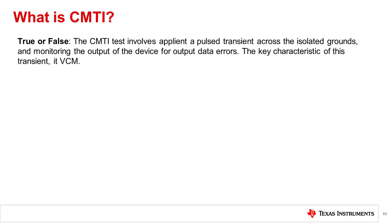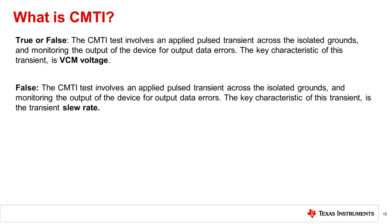True or false: the CMTI test involves applying a pulse transient across the isolated grounds and monitoring the output of the device for output data errors. The key characteristic of this transient is VCM. False. The CMTI test does involve applying a pulse transient across isolated grounds and monitoring the output of the device for output data errors, but the most critical characteristic of this test is the transient slew rate.